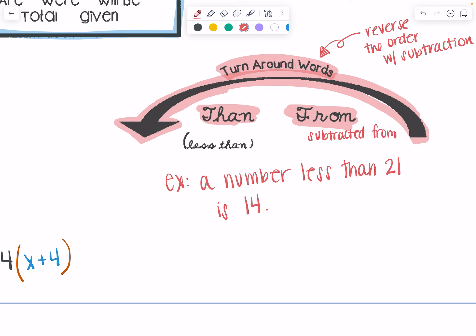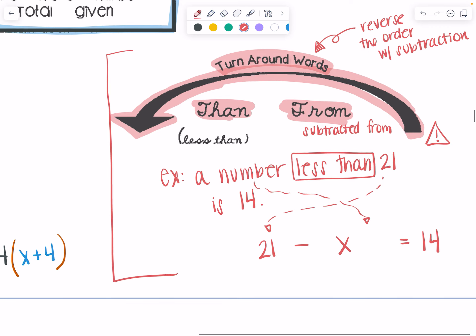So less than and subtracted from. And so here's our example. A number less than 21 is 14. So I've got that less than. I like to put the caution symbol, that turnaround word. So what that means is 21 is going to come up front and a number is going to go to the back. And then I still have is 14.